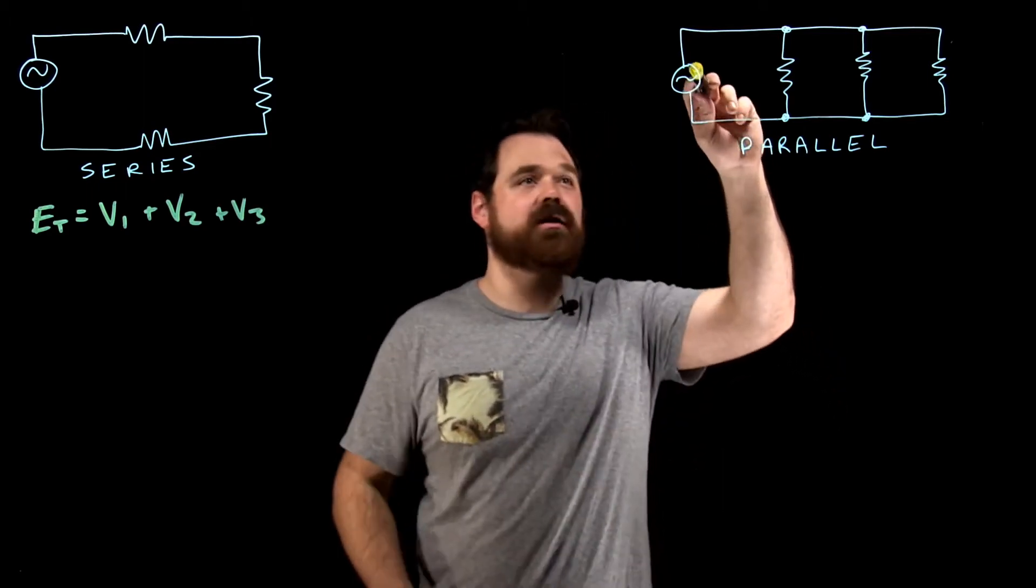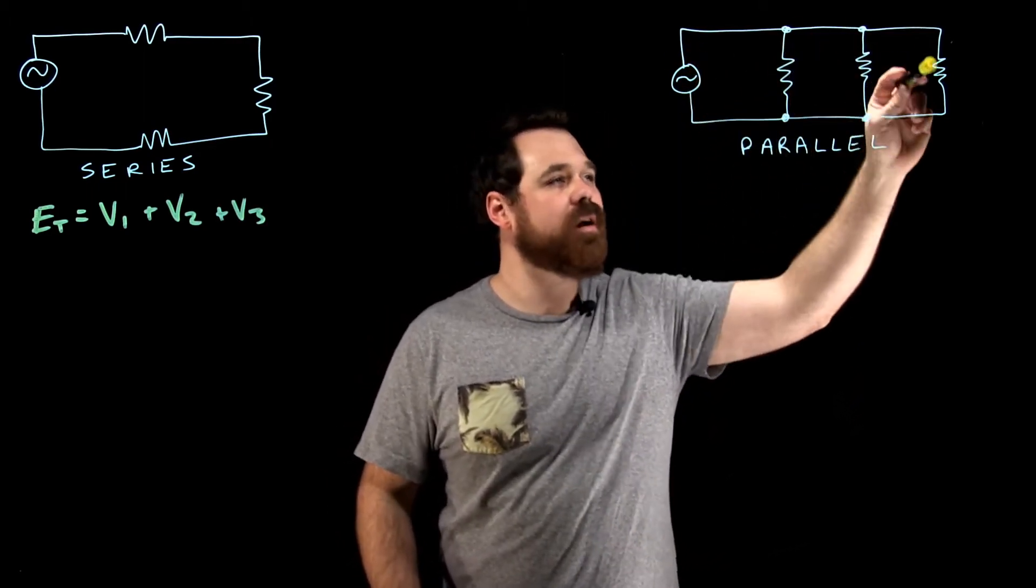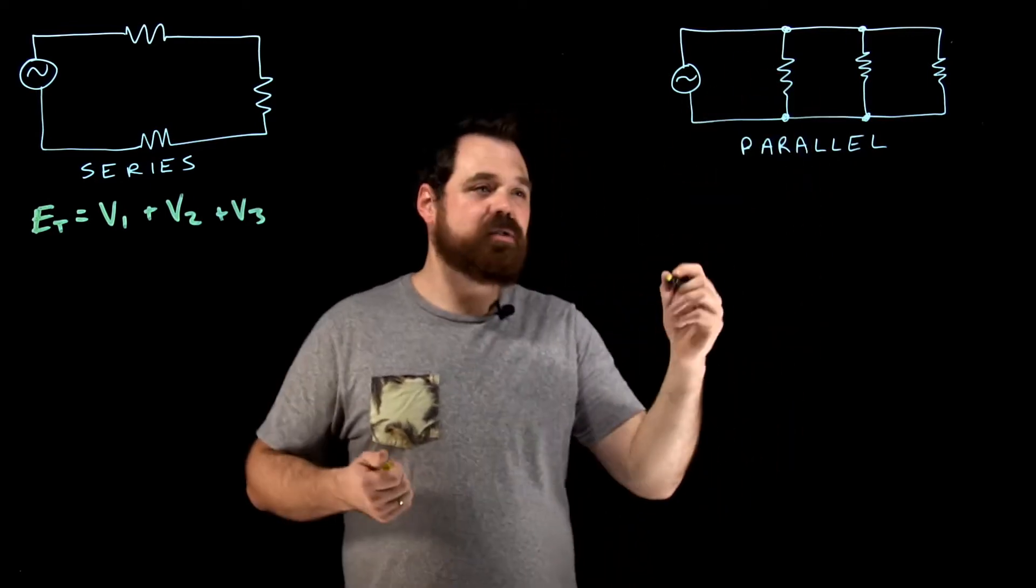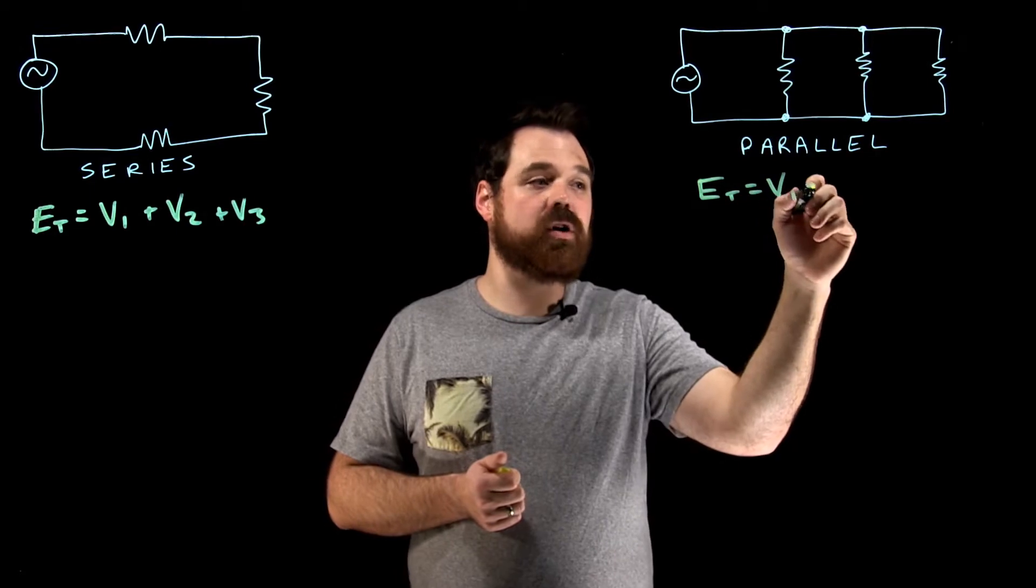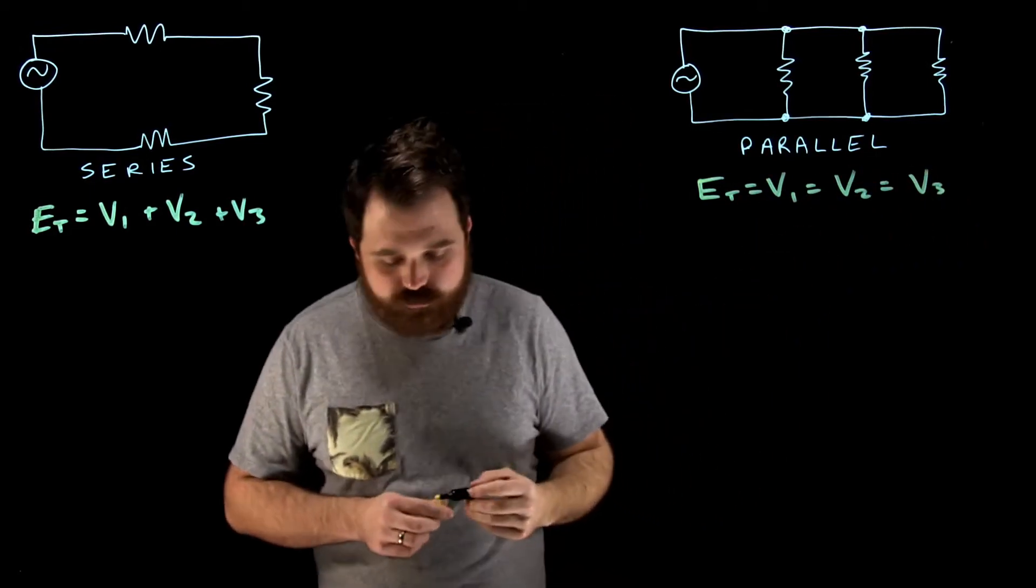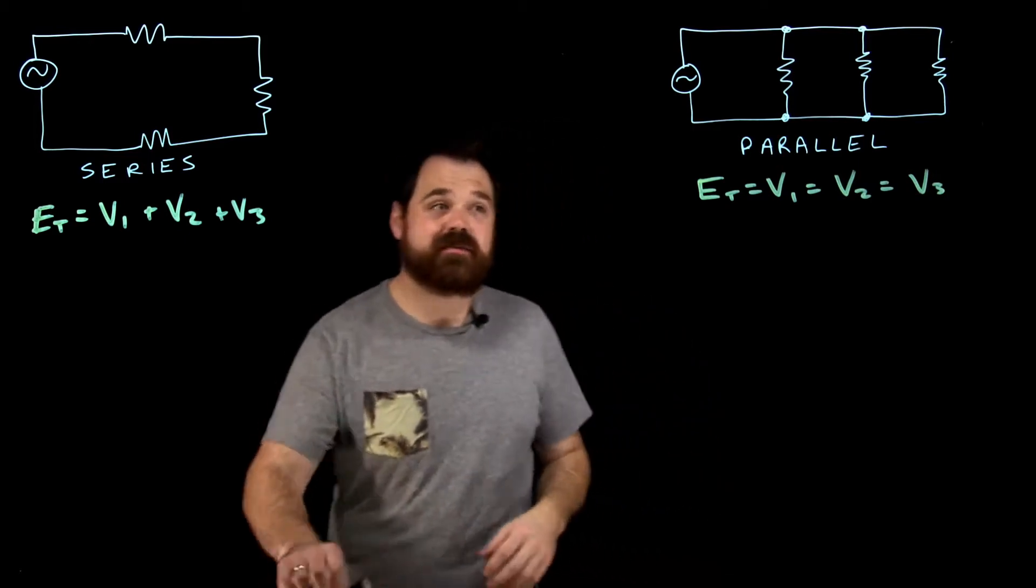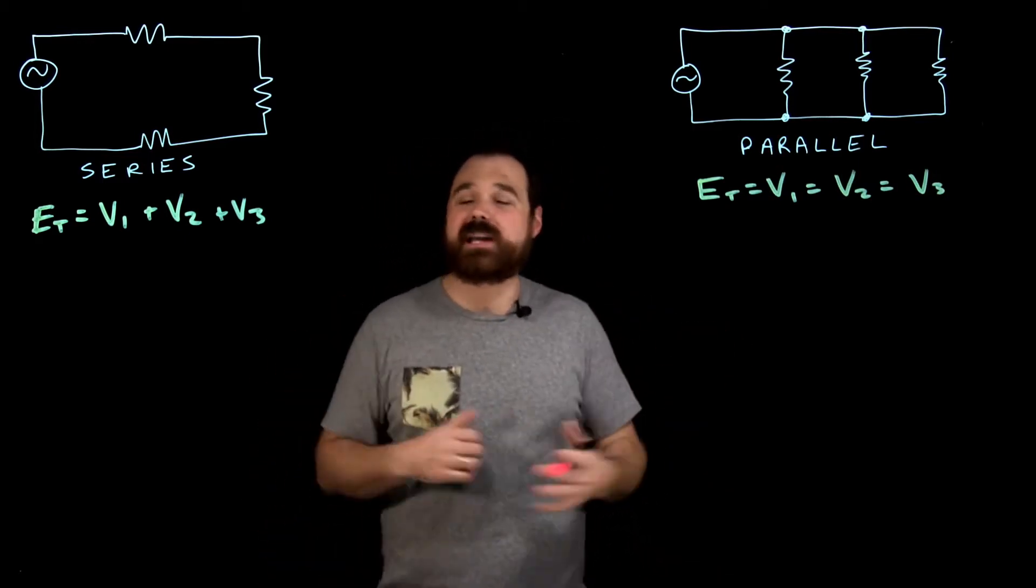In parallel, what we see is that this is a closed loop, this is a closed loop, and this is a closed loop. We see that E total equals all of our voltage drops. That's our voltage rules and the formulas we use for our calculations.